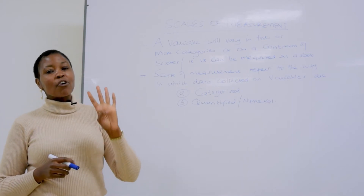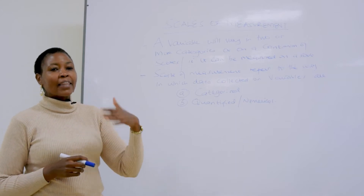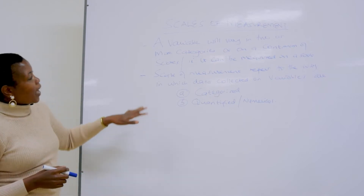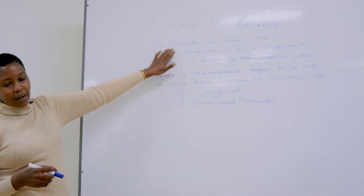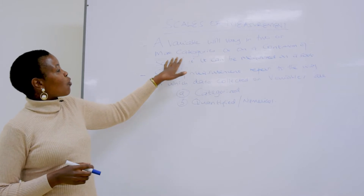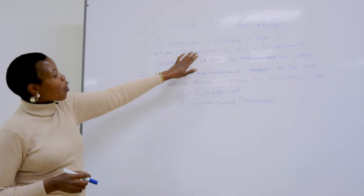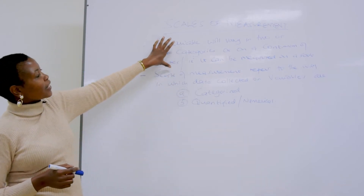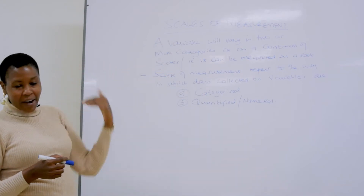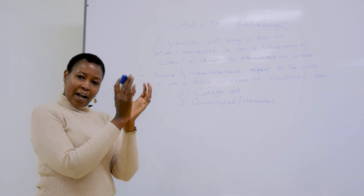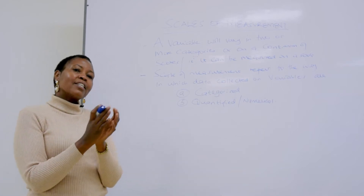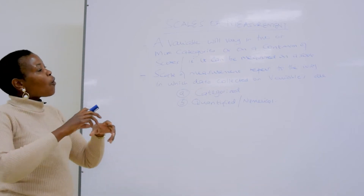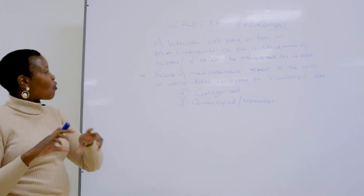We are going to discuss the four scales of measurement, which other researchers call levels of measurement. A variable will vary in two or more categories or on a continuum. This is telling us that a variable can exist as a category or in categories, and can also exist on a continuum.